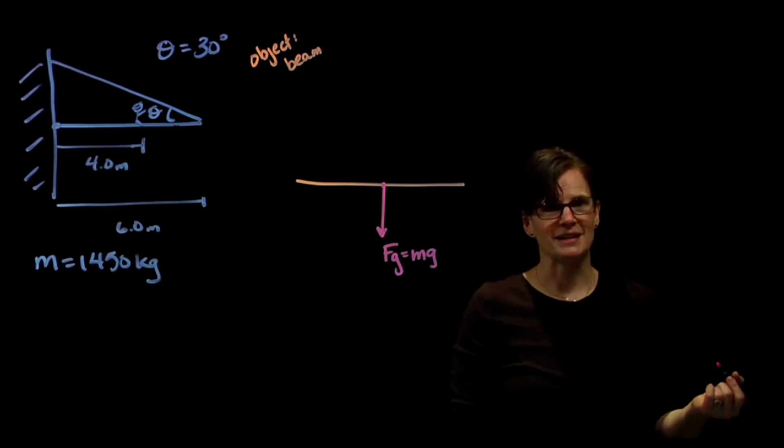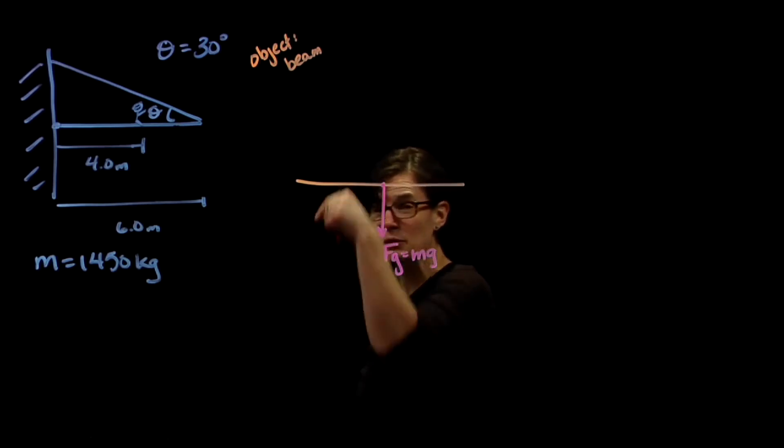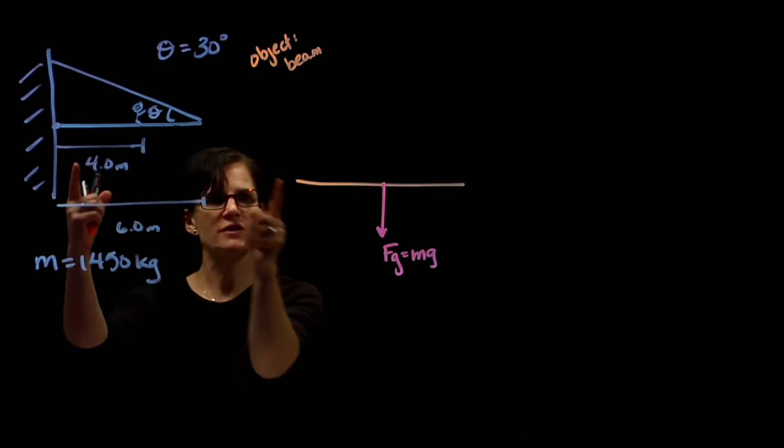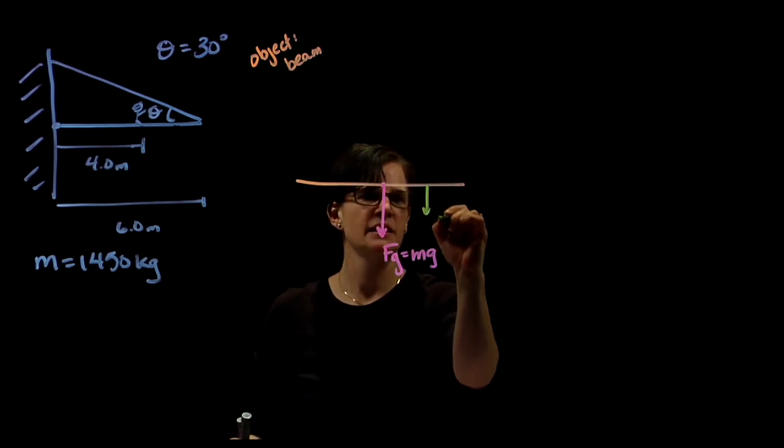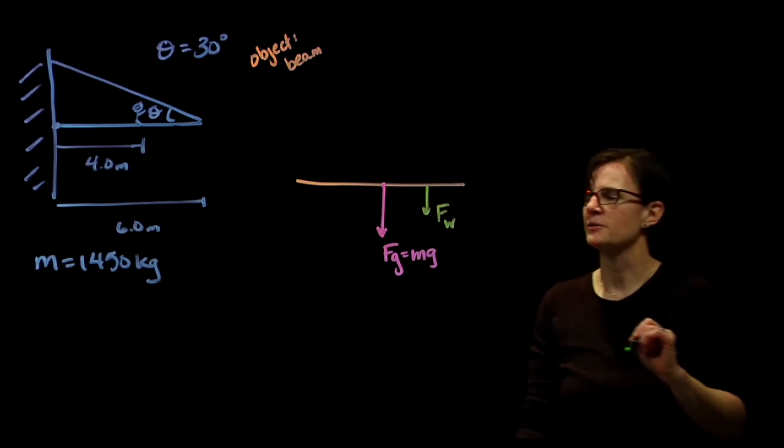What's another force acting on the beam? The guy's sitting on it. He's pushing down on the beam. There's a force between the beam and the guy. He's sitting four meters from this end of the beam, so we will draw his force. Here's the force of the worker on the beam, four meters from the end.